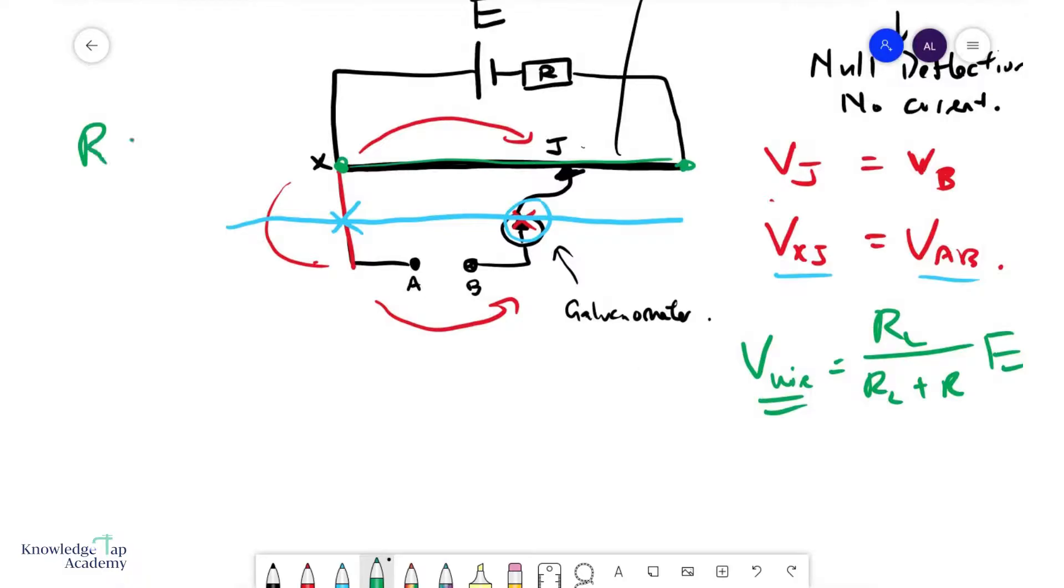...the resistance is proportional to the length. We have seen this before when we saw R equals rho L over A. We can figure out what Vxj is simply by taking the ratio Lxj over the length of the wire L multiplied by Vwire, which we have calculated earlier. And then of course Vab simply equals Vxj.